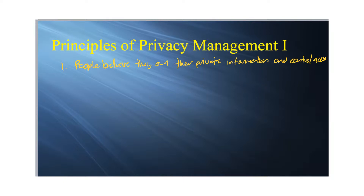One thing that comes up in relationships is that private information gets shared. In order to be intimate with someone, you have to share private information — that's what intimacy means, sharing things you don't normally share with others. Some of that will be private, and you only want your partner, your best friend, or your sister to know. The core cultural belief is that I have the right to control who can and cannot know — for example, if I have a medical condition, I believe only I have the right to tell others.